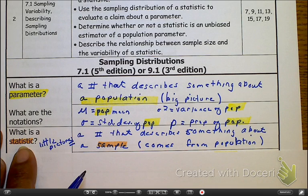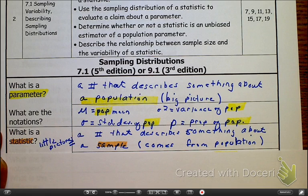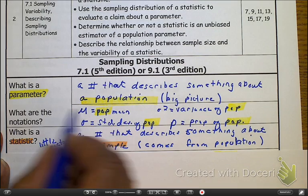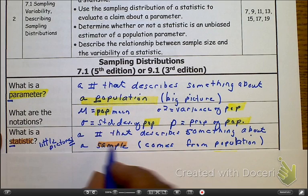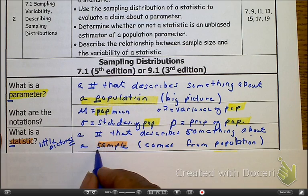But when you hear the word statistic, you're going to have to now calibrate yourself that statistic means that it's the same as the sample stuff that we've done in the past. Parameter means population. So here, you can see P for parameter, P for population, S for sample, S for statistic.